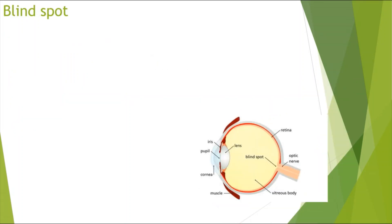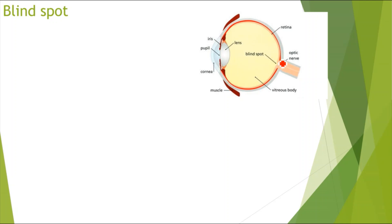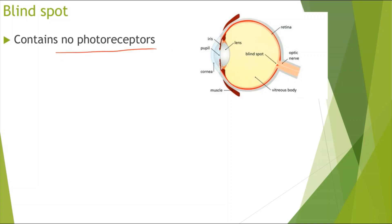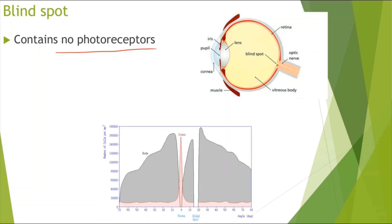Finally, looking at the blind spot. The blind spot is a spot in the retina where there are no photoreceptors — no rod or cone cells. As you can see in the diagram, the blind spot has no rod or cone cells, so it cannot detect or be stimulated by light. If light enters the blind spot, there will be no image formed.